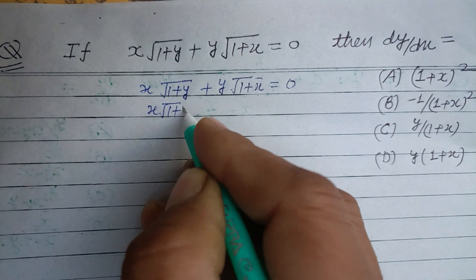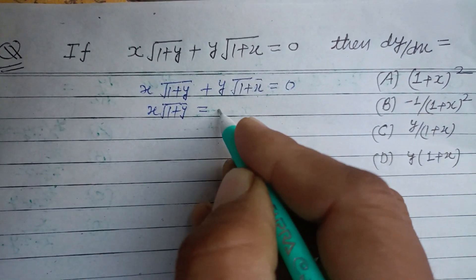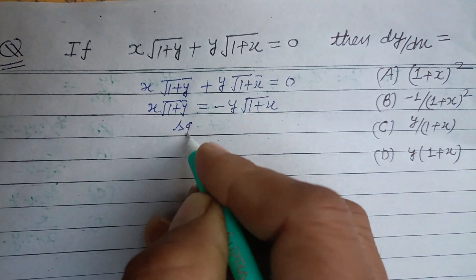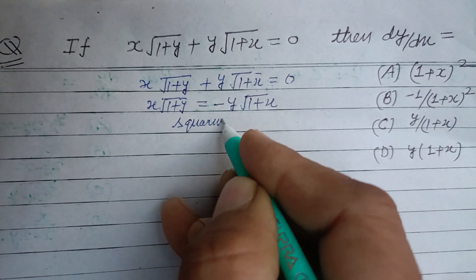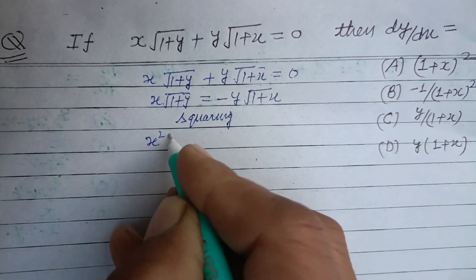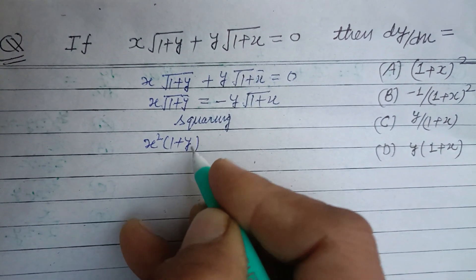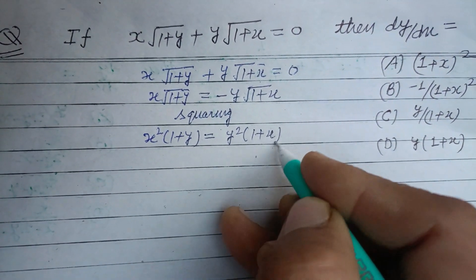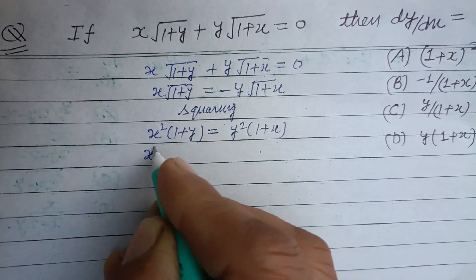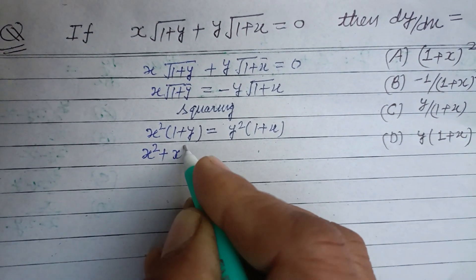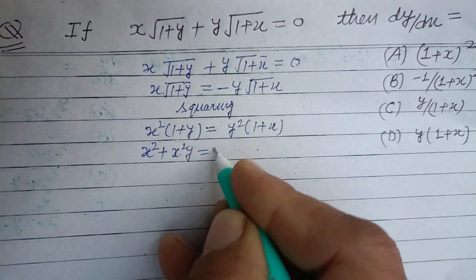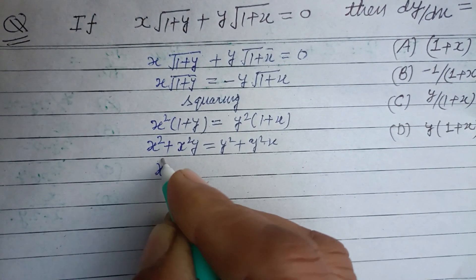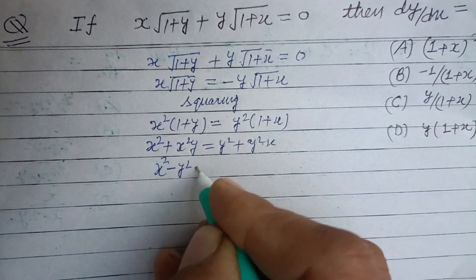Rearranging: x√(1+y) = −y√(1+x). Squaring both sides, this becomes x²(1+y) = y²(1+x). Now simplifying: x² + x²y = y² + y²x.